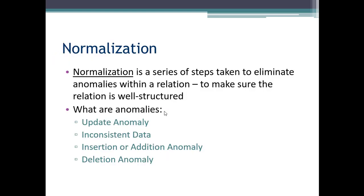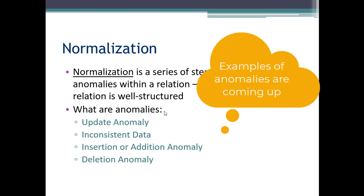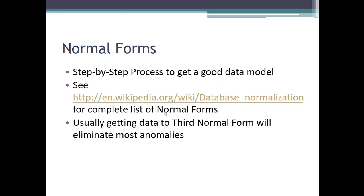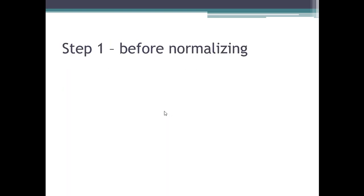What is normalization? This is going to be a series of steps to eliminate anomalies within a relation, to make sure the relation is well structured. What are anomalies? We have an update anomaly, inconsistent data is an anomaly, an insertion or addition anomaly, and deletion anomaly. So this step-by-step process of normalization gives us different normal forms. We're going to go through the third normal form. Here is a hyperlink where you can see that there are other normal forms beyond third normal form. As I said, usually getting to third normal form is adequate for most businesses.